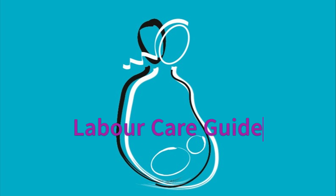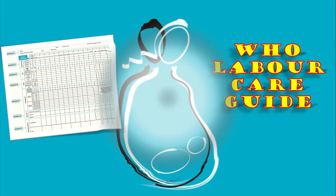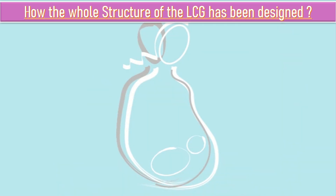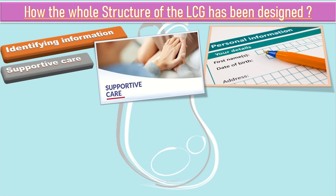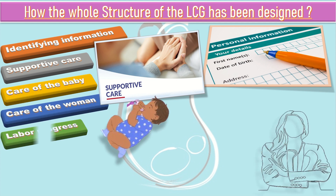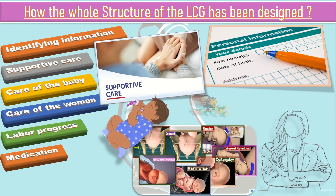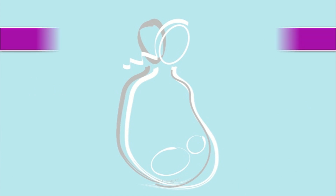Bismillahirrahmanirrahim. Today we will talk about the WHO Labor Care Guide — how the whole structure has been designed. The Labor Care Guide has seven sections which were adopted from the previous partograph design. The sections include: identifying information and labor characteristics at admission, supportive care, care of the baby, care of the woman, labor progress, medication, and shared decision making.